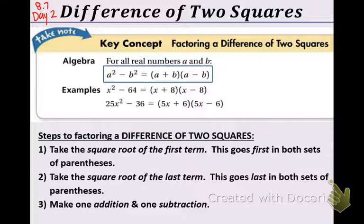Now remember, difference means subtraction, so you'll definitely see a subtraction sign, and squares obviously means that you can take the square root of those numbers. So focus your attention on the key concept box on the top of this page. It's also on the top of your note sheet. A squared minus B squared. That is the common form for the difference of two squares.